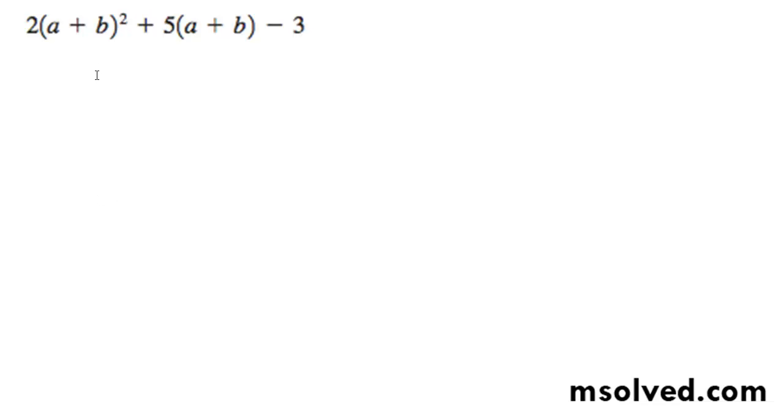We want to simplify this by grouping everything together. So what's going to happen here, and I'll be writing this out, we've got (a + b), (a + b), plus 5, (a + b) minus 3.